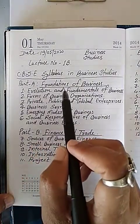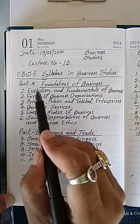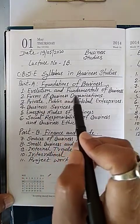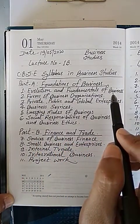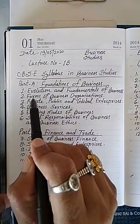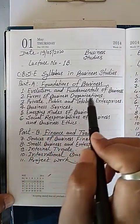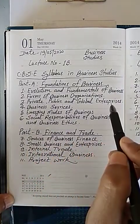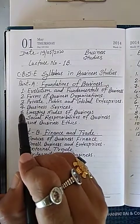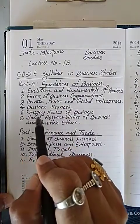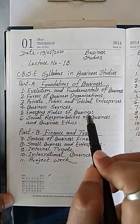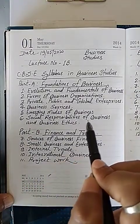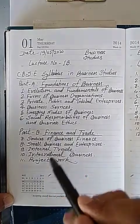Under Part A, there are six chapters. The first chapter is Evolution and Fundamentals of Business. Second chapter is Forms of Business Organizations. Third chapter is Private, Public and Global Enterprises. Fourth chapter is Business Services. Fifth chapter is Emerging Modes of Business. Sixth chapter is Social Responsibility of Business and Business Ethics.